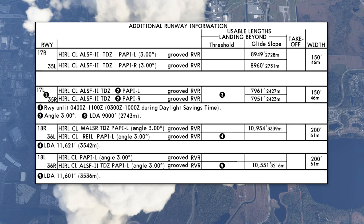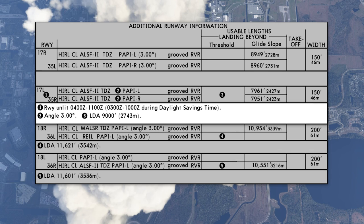Number ten lists all runways in numerical order for easy reference. Number eleven provides any applicable notes for specific runways — they're numbered so it's easy to follow. For example: note one says the runway is unlit from 0400 Zulu to 1100 Zulu; note two gives the glide angle as three degrees. There can be many notes, so make sure you review them to understand exactly what's going on with each runway.